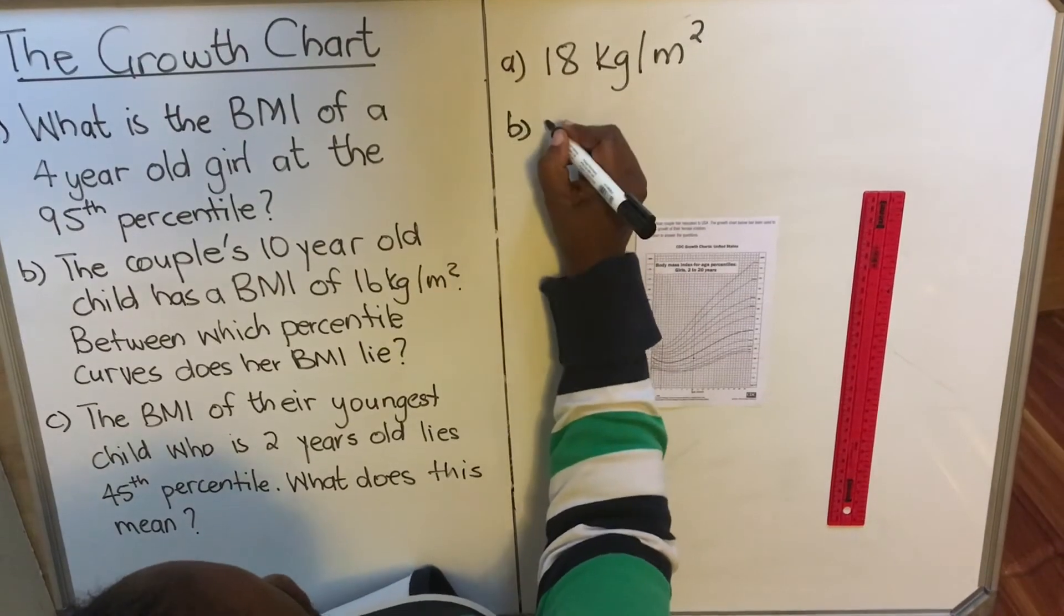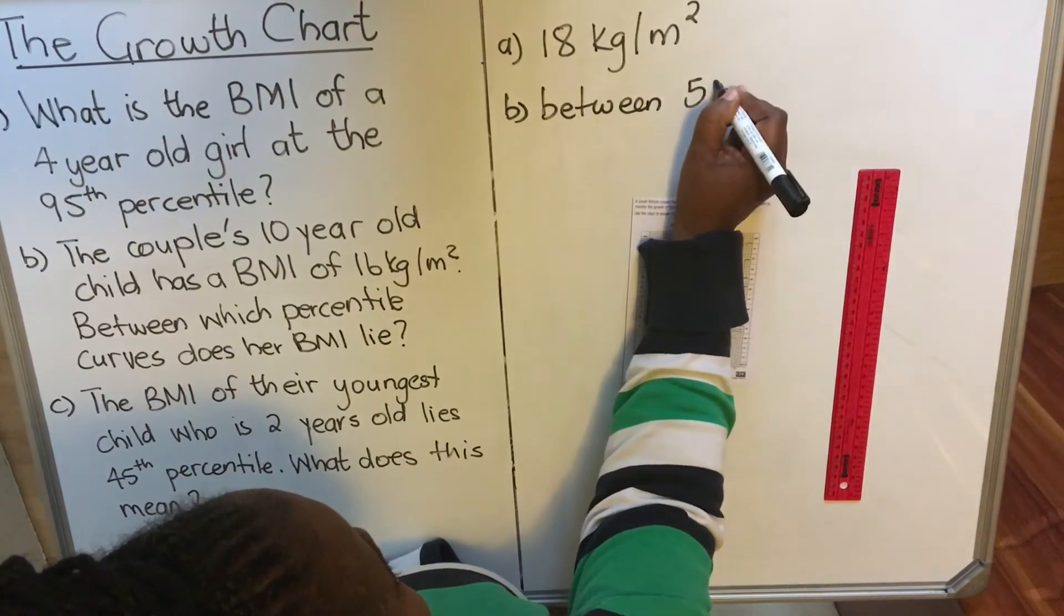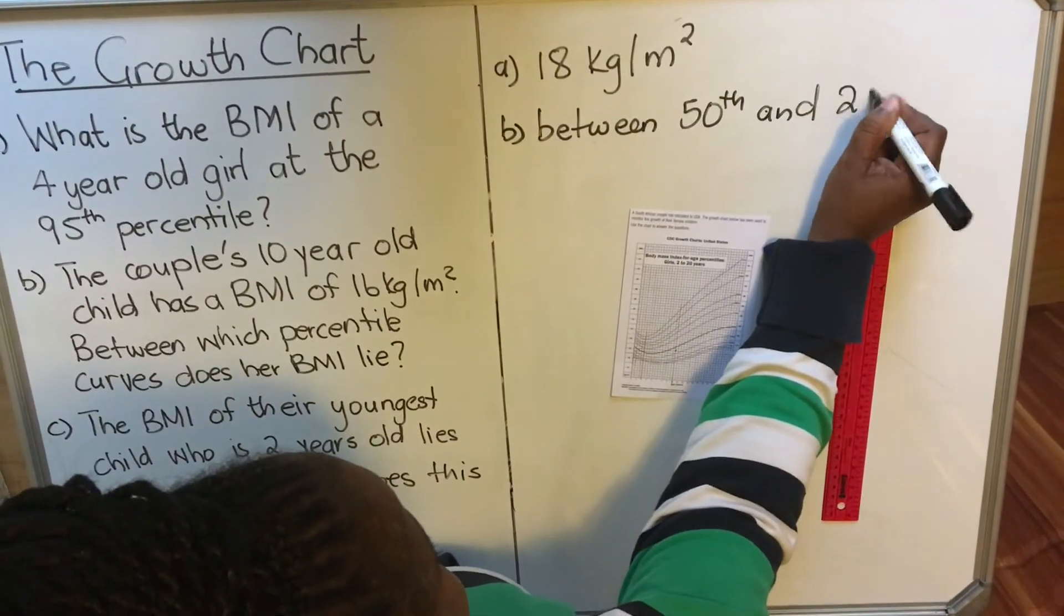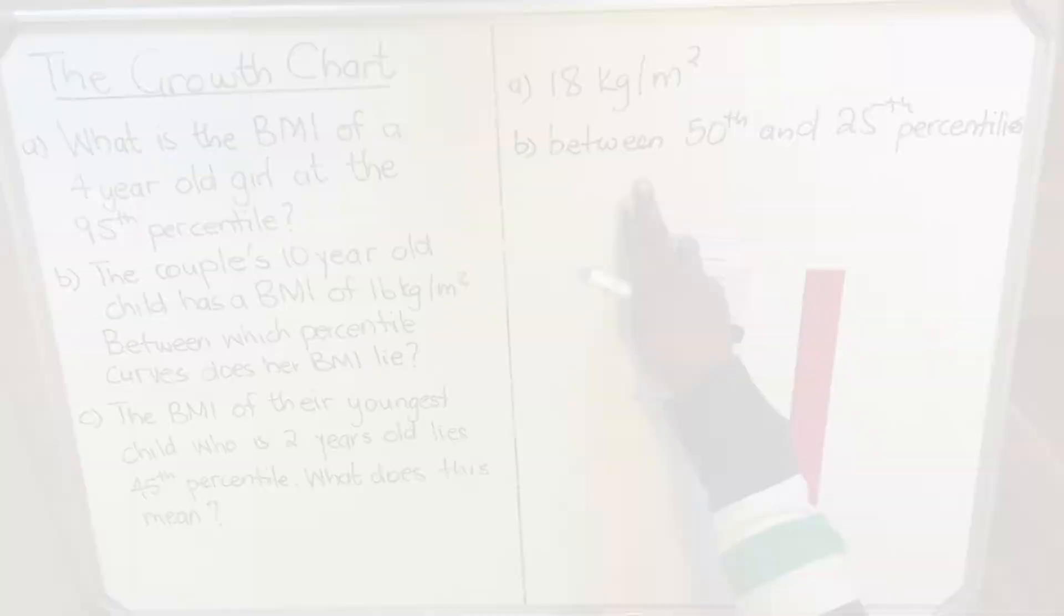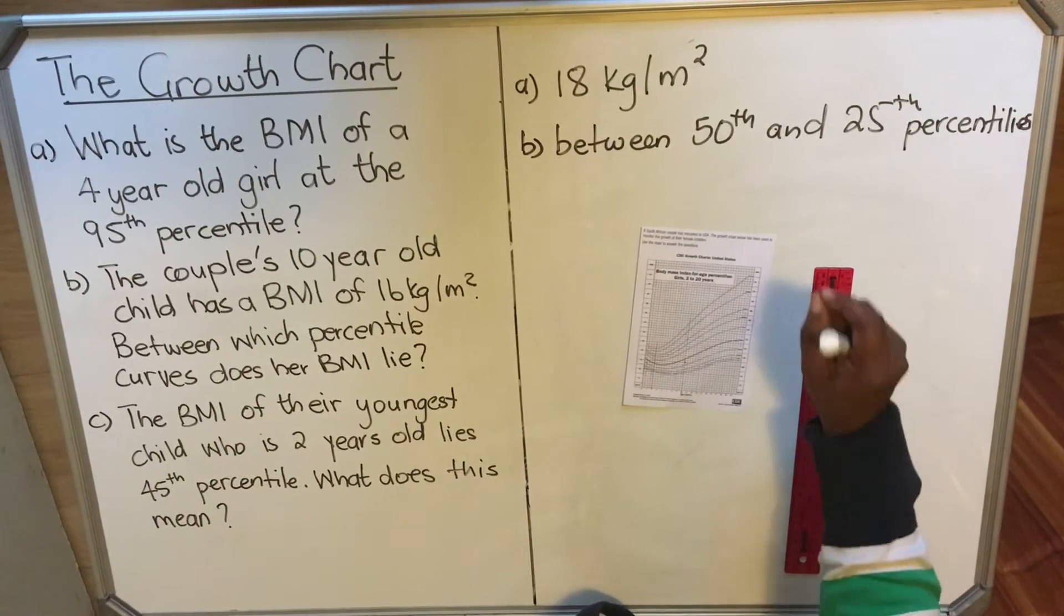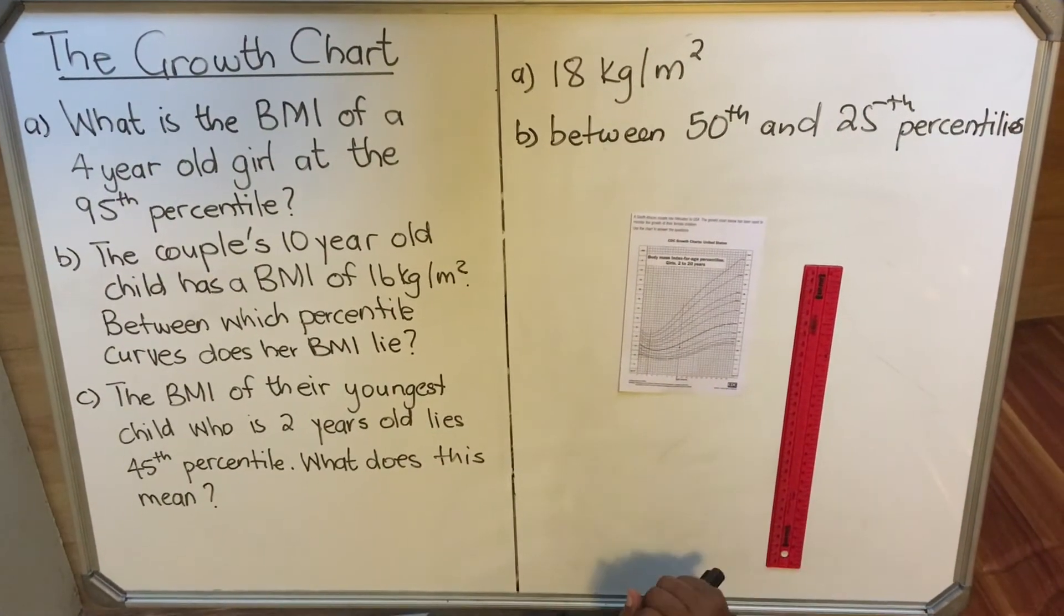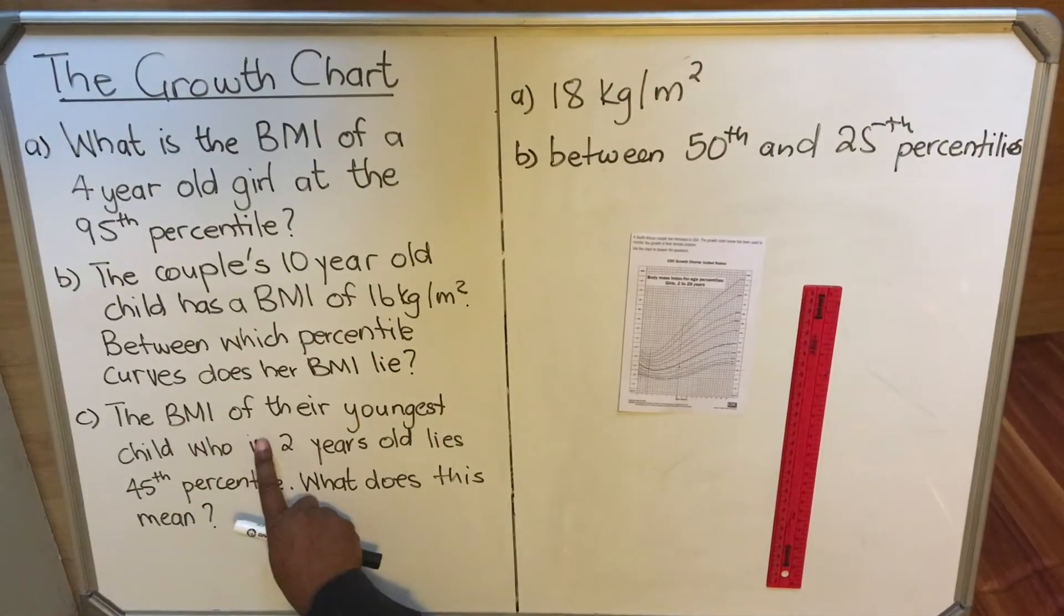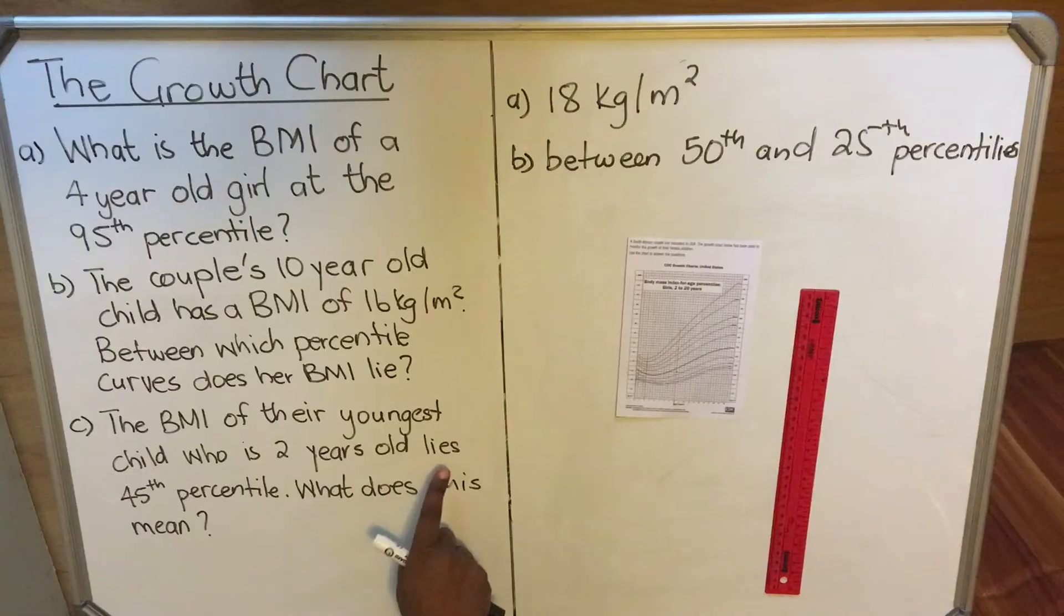That's what you write. So your answer for B, it's between the 50th and 25th percentile. You don't have to write percentile right for this answer, just write the percentile because you are answering as to which percentiles. Let's do the last one.